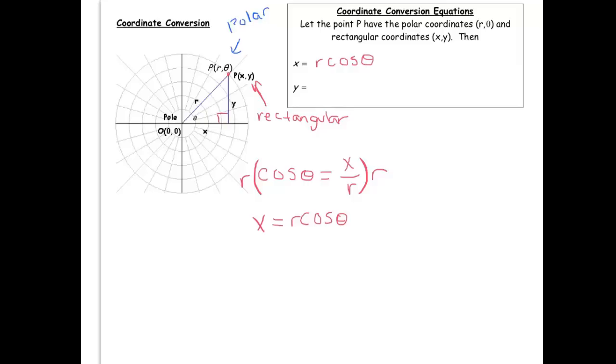And likewise, in the picture, the sine of theta is opposite over hypotenuse, which is y over r. And multiplying both sides by r, we get that y equals r sine theta.